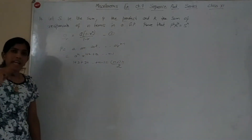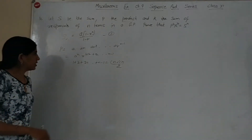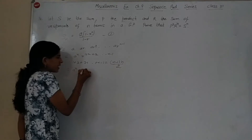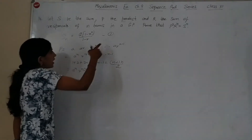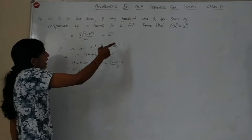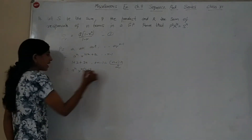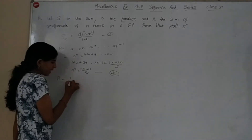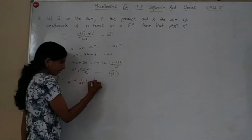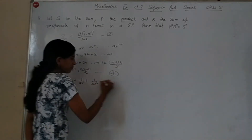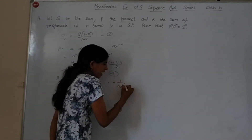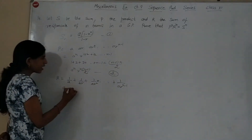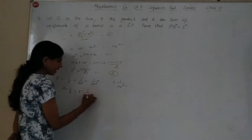So P = aⁿ · r^(n(n-1)/2). Now R is the sum of reciprocals, so the terms are 1/a, 1/(ar), 1/(ar²), up to 1/(ar^(n-1)). Here the first term is 1/a and common ratio is 1/r.